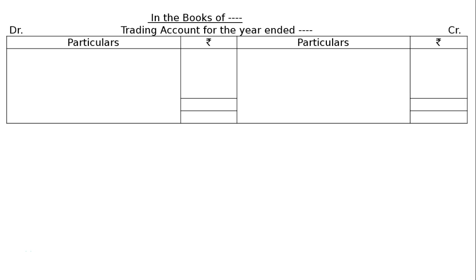The question is to ascertain gross profit from the following. We have to read all the items — there are two items which do not belong to this question: carriage on sales and office rent. These two are office expenses and will be shown on the debit side of the Profit and Loss Account, not the Trading Account.